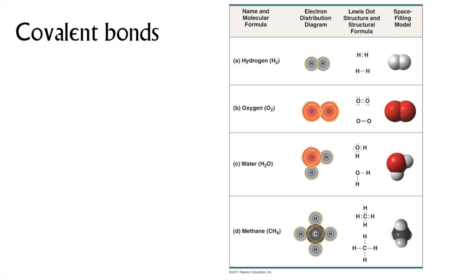In oxygen gas, two oxygen atoms are sharing not one but two pairs, or four electrons. You can share two or even three pairs of electrons to form double or triple covalent bonds. Double and triple bonds are more difficult to break than single bonds. Water, good old H2O, is the star of chapter 3. In water, one oxygen atom shares a pair of electrons with each of the two hydrogen atoms. And in methane, a carbon atom shares four electron pairs, each with a hydrogen atom, to produce CH4.